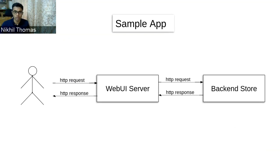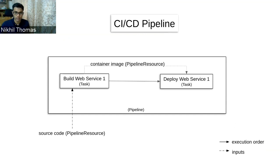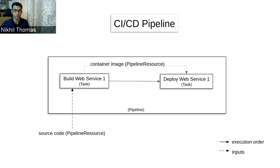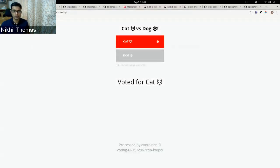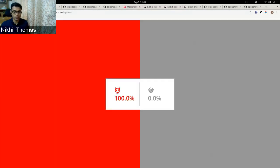This is going to be the structure of our application, which has two services — one is a web UI server and the second is a backend service. Our CI/CD pipeline has two tasks or stages. The first stage will take the source code and build a container image, and the second task will take that image and create a deployment on the cluster. The end result is a simple voting application where you can vote for a cat or a dog and see the result.